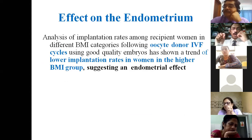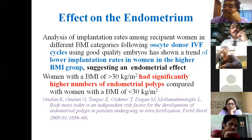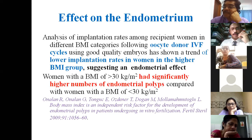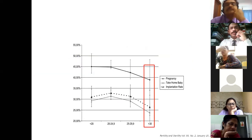Obesity also affects the endometrium. In obese PCOS women undergoing donor IVF cycles, as BMI increases the chance of conception and live birth rate decreases even when using donor embryos. There is increased risk of endometrial hyperplasia and endometrial polyp, which significantly interferes with implantation in both natural pregnancy and IVF. When adjusted for embryo quality, as BMI increases the implantation rate decreases significantly.